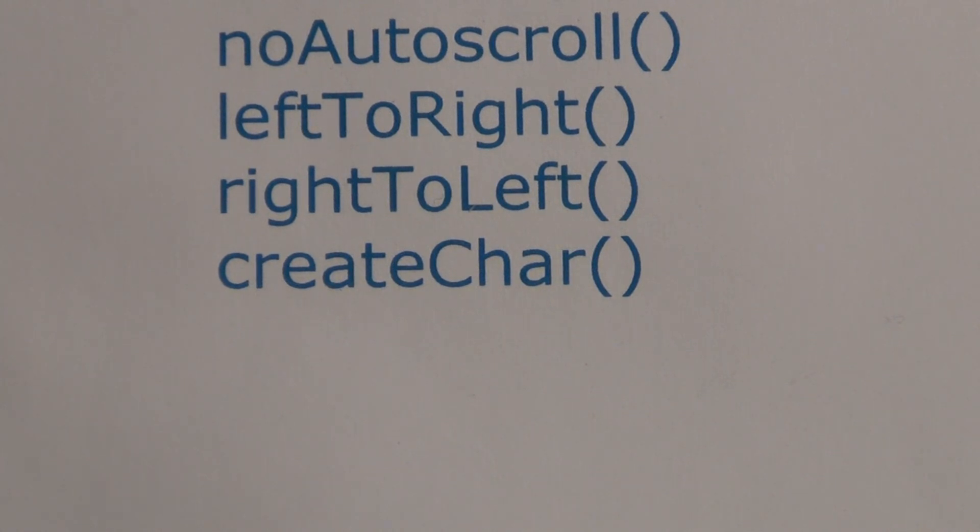The create character function lets you create custom characters or glyphs to be displayed on the LCD and you can create up to eight custom characters. They'll be five by eight pixels and the appearance of each character is specified by an array of eight bytes, one for each row, and it's the five least significant bits of each byte that determines the pixels in that row. So that determines what pixel is on and what pixel is off.